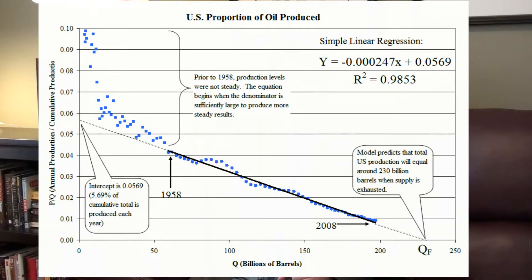Because of the complexity in Hubbert's analysis, it's easier to use linearization to estimate the total amount of oil in place. This is important because linearization only requires one variable: annual production. The first step in the process is to plot the production data as a fraction of cumulative production on the vertical axis. Cumulative production is placed on the horizontal, or x-axis.